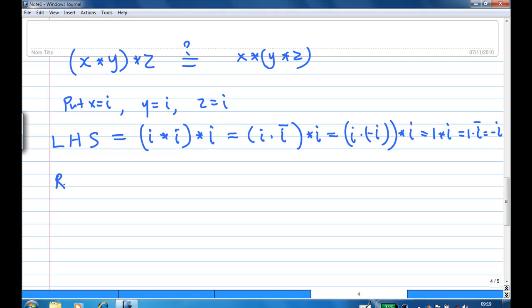Now let's look at the right hand side. The right hand side is i star i star i with the bracket behind. Now with the bracket behind, i star i is i times conjugate of i. Conjugate of i is minus i. And i times minus i is 1. Now i star 1 is i times conjugate of 1. But the conjugate of 1 is also 1. And i times 1 is i.